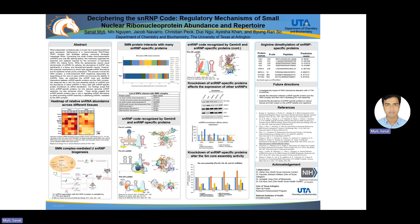Very interestingly, I found that knockdown of specific proteins affects other SNARF-specific protein expression as well. For example, when I knocked down NHP2L1, it actually affected U2A' and PRPF4 protein expression.